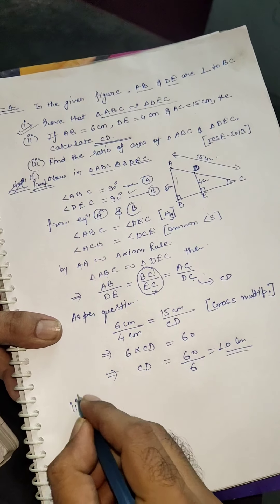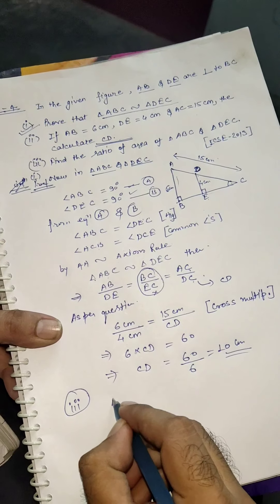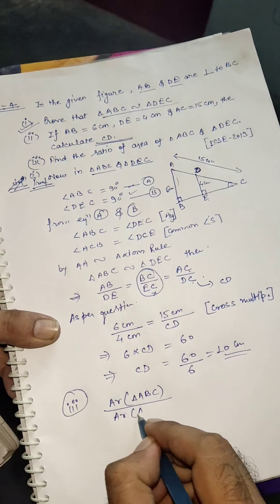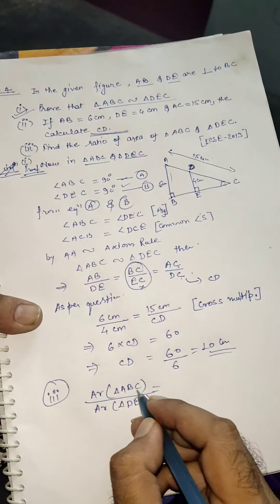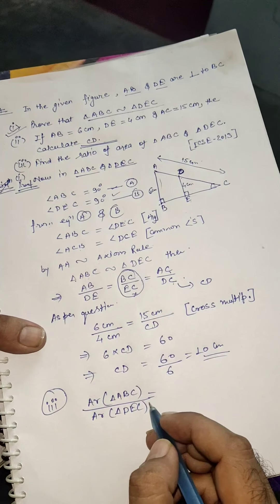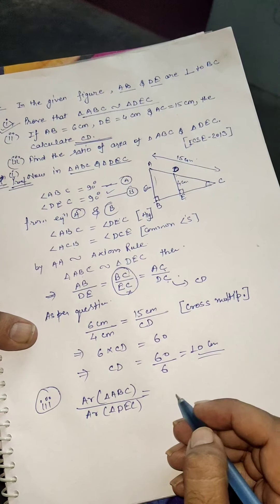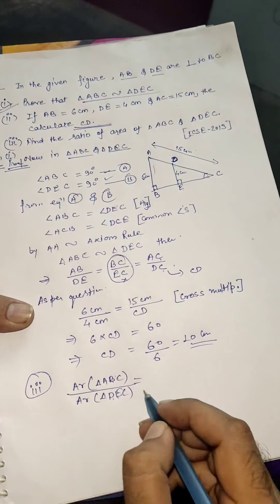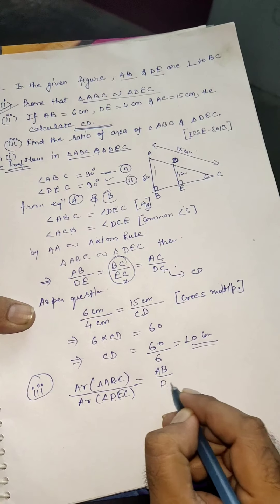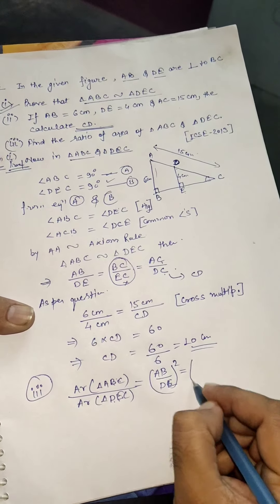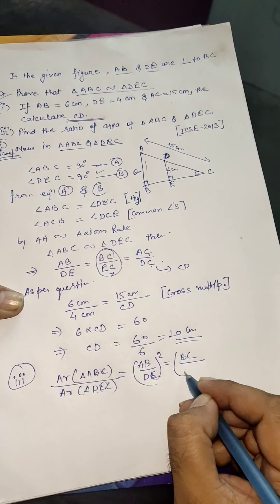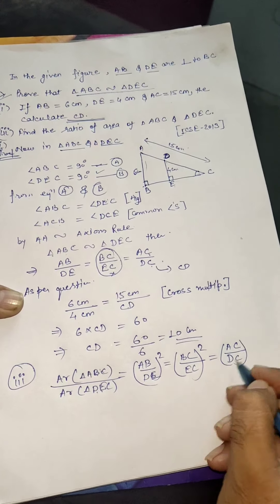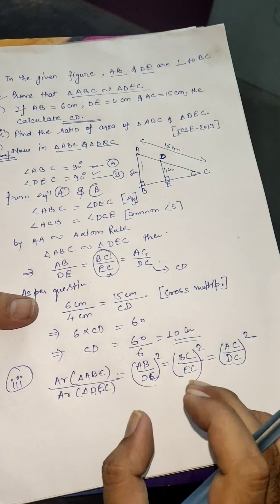For the third part, we need to find the ratio of the areas of triangle ABC and triangle DEC. We know that the ratio of the areas of two similar triangles is equal to the square of the ratio of their corresponding sides. So: area of △ABC / area of △DEC = (AB/DE)².